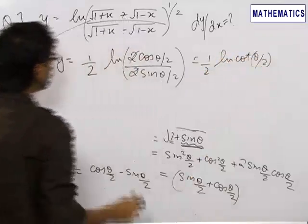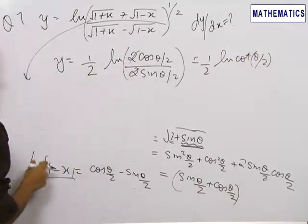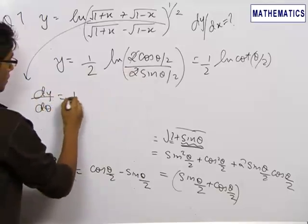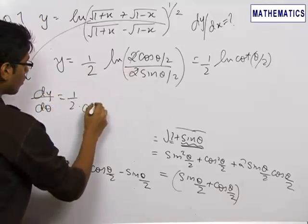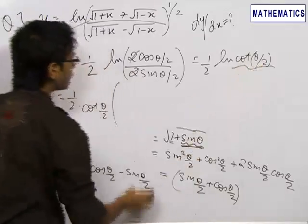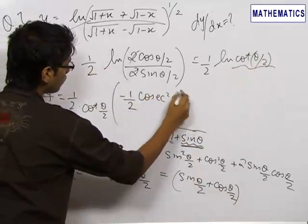Now we can very easily differentiate the whole equation because now it has been converted into a simple equation in θ, to get dy/dθ as half cot(θ/2) into differential of cot(θ/2), which is minus half cosec²(θ/2).